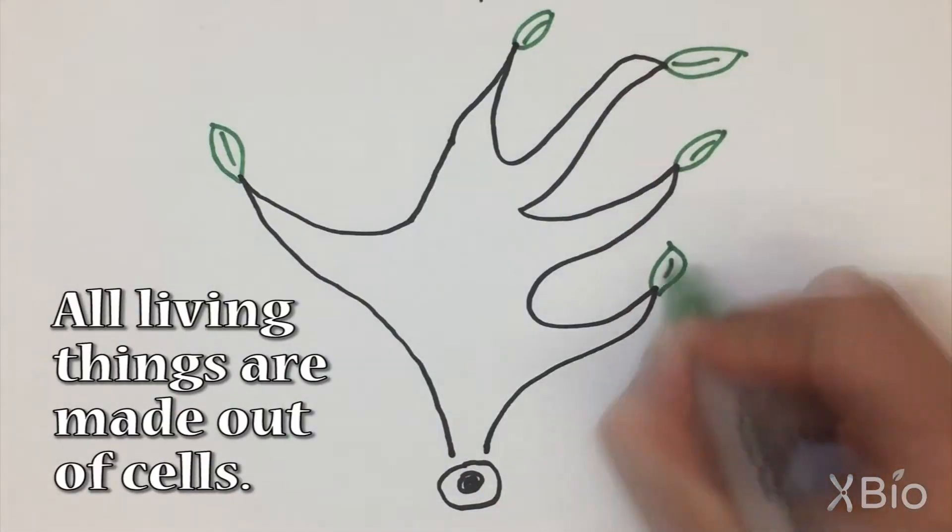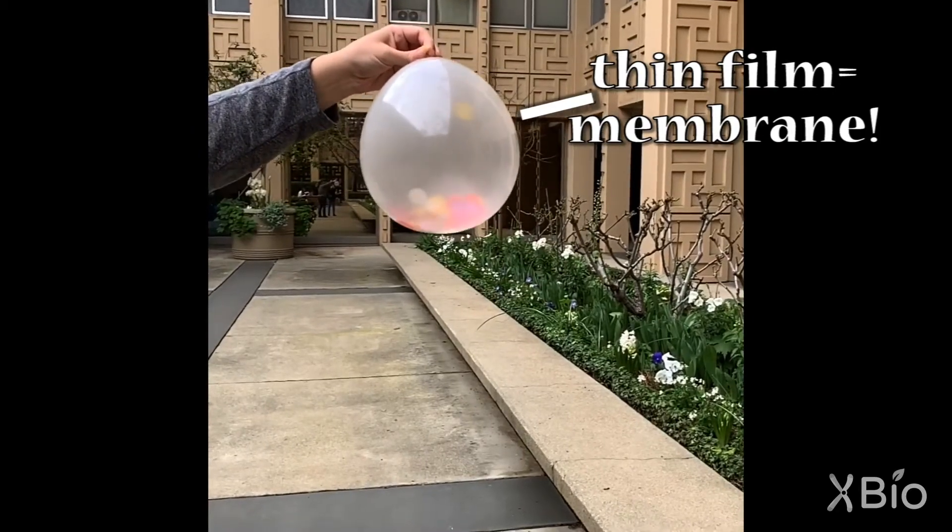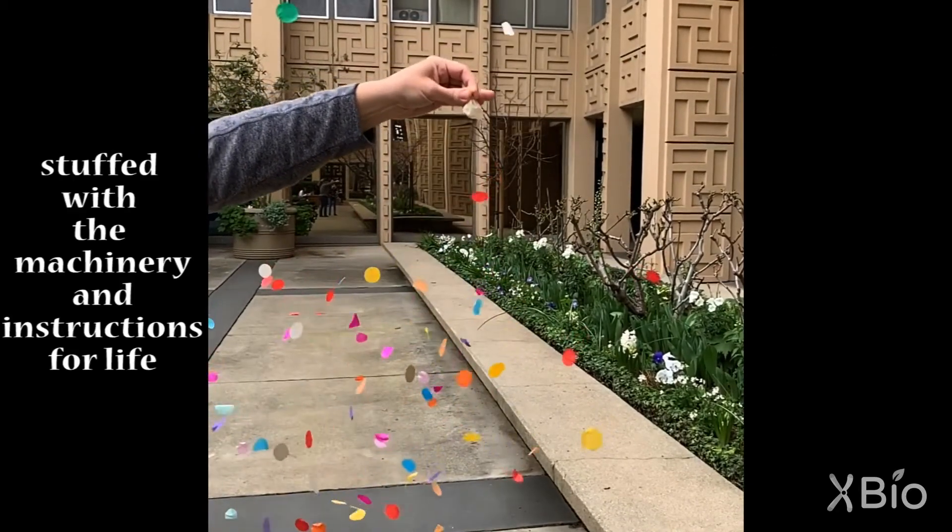All living things are made out of cells. Every cell is surrounded by a thin film called a membrane, stuffed with the machinery and instructions for life.